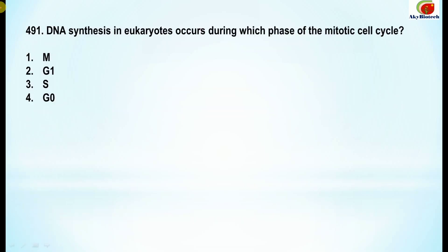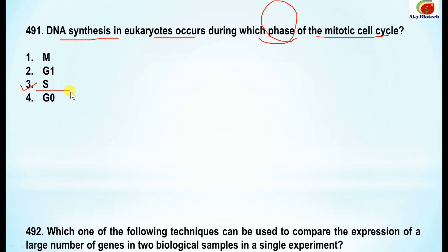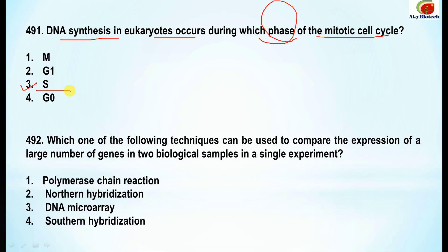Question 491: DNA synthesis in eukaryotes occurs during which phase of the mitotic cell cycle? DNA synthesis occurs during the S phase.